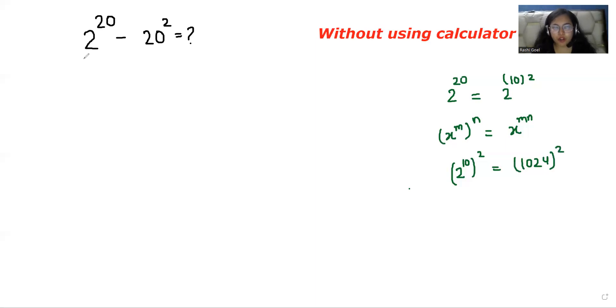So I'm going to replace 2^20 with 1024^2 minus 20^2. Here we can use the famous identity: a^2 - b^2 equals (a+b)(a-b).